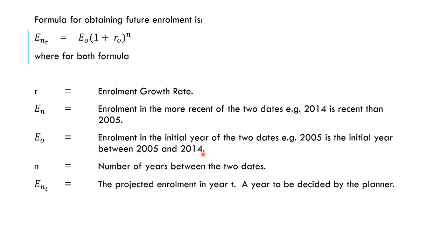Then ENT, the projected enrollment in year T, a year to be decided by the planner. So in that case, it depends on the situation, what you want to provide solutions to. Where in 2019, you may decide to project into 2025 and so on.